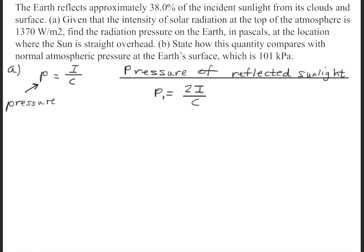So the first thing we need to do is find the pressure of the reflected sunlight, and we can find that by doing the pressure is equal to two times the intensity divided by the speed of light. The reason why we're doubling the intensity is because of this statement right here. The Earth reflects approximately 38% of the incident sunlight from its clouds and surface. So there are two sources where the pressure will occur, from the Earth's clouds and the Earth's surface.